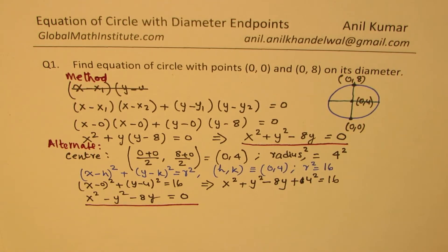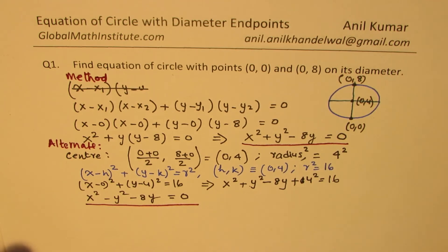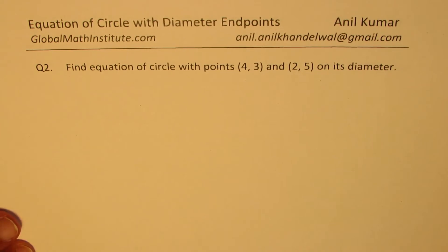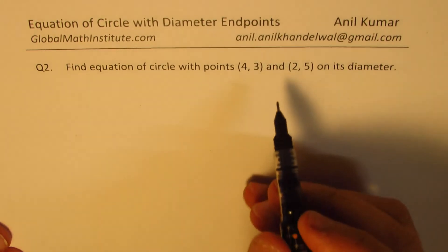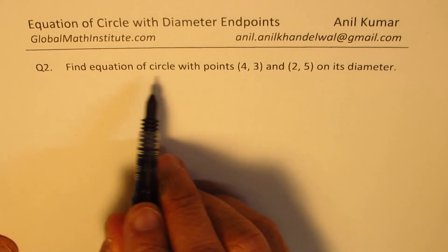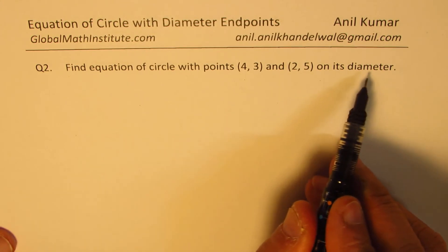Question 1 is solved using both methods — a relatively simple question, but it helps us understand that you could adopt either method to find your solution. Now we are going to use the derived equation to find the equation of the circle using points on the diameter. Question 2: Find the equation of the circle with points (4, 3) and (2, 5) on its diameter.